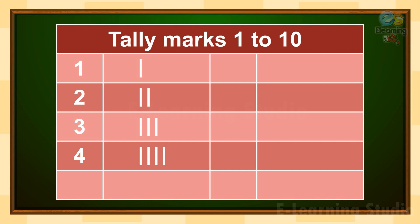Now to represent number 5, first we will draw 4 vertical lines: 1, 2, 3, 4, and after that we draw a slanting line. This is a group of 5 tally marks. We use a group of 5 tally marks in one place by drawing 4 vertical lines and 1 slanting line.